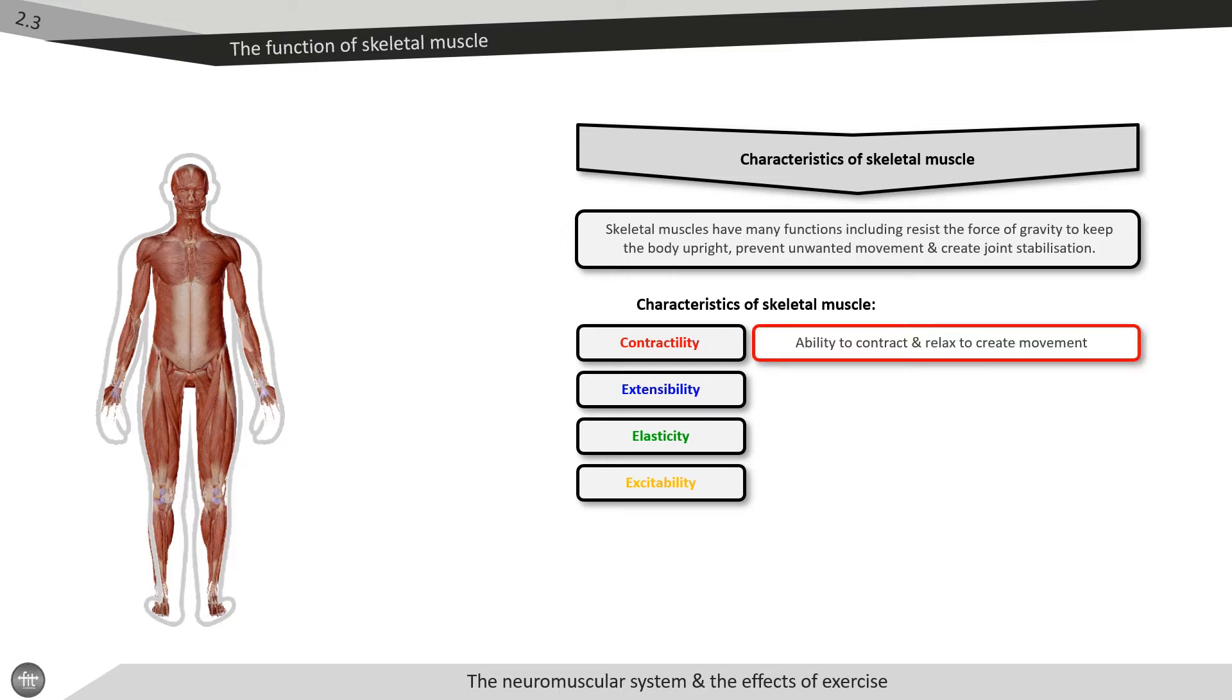Contractility is the ability to contract. Skeletal muscles work in pairs and contract and relax to create the movement of the skeleton.